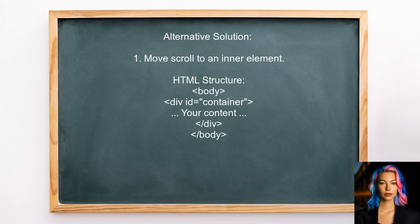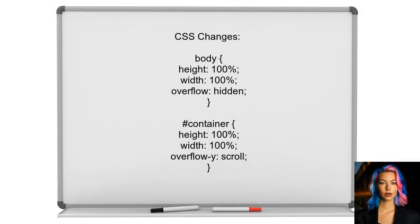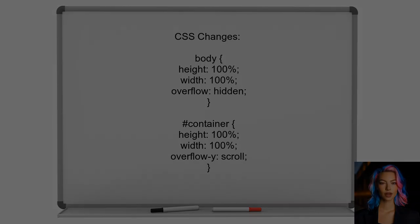An alternative solution provided by another user suggests a workaround for the scrolling issue. They recommend moving the scroll functionality from the body element to an inner container element. In the CSS, set the body to have no overflow and the container to allow vertical scrolling. This way, when the dialogue closes, the page will not scroll to the top.